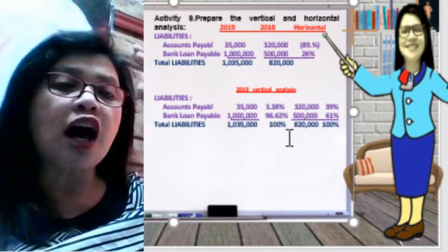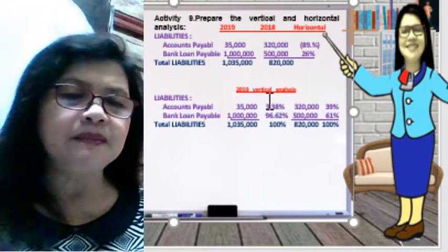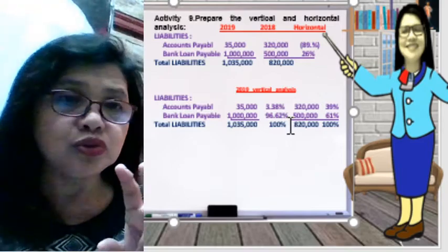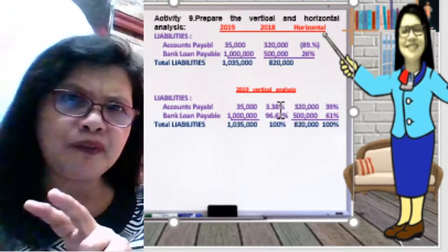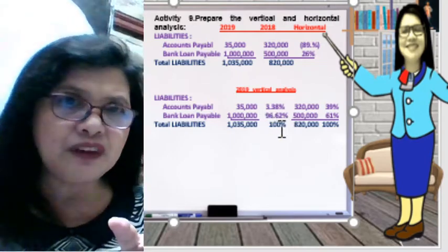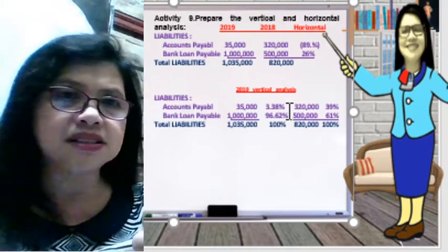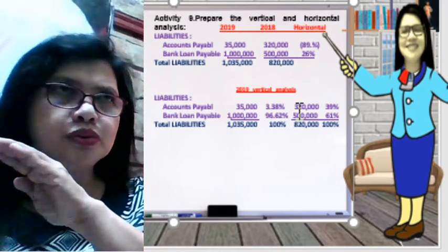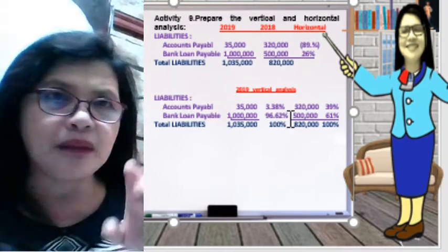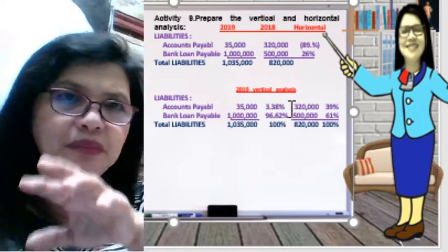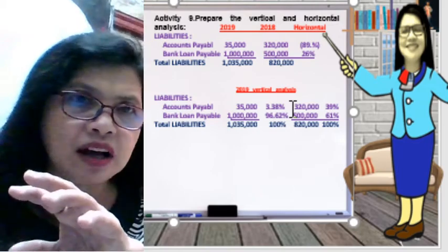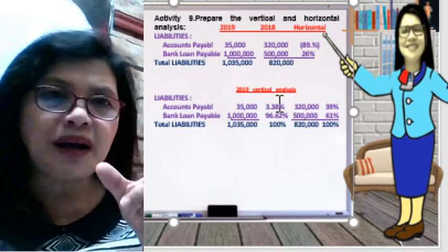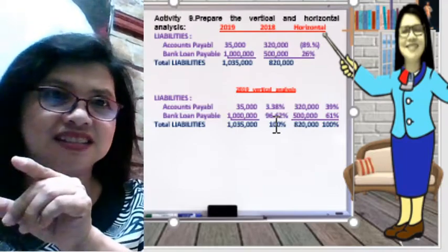Vertical analysis is a common size analysis. For example, if this were Jollibee Philippines or ABC company, the 3.38% accounts payable percentage can be compared to DEF company in the same industry. These percentages can be compared across other companies.